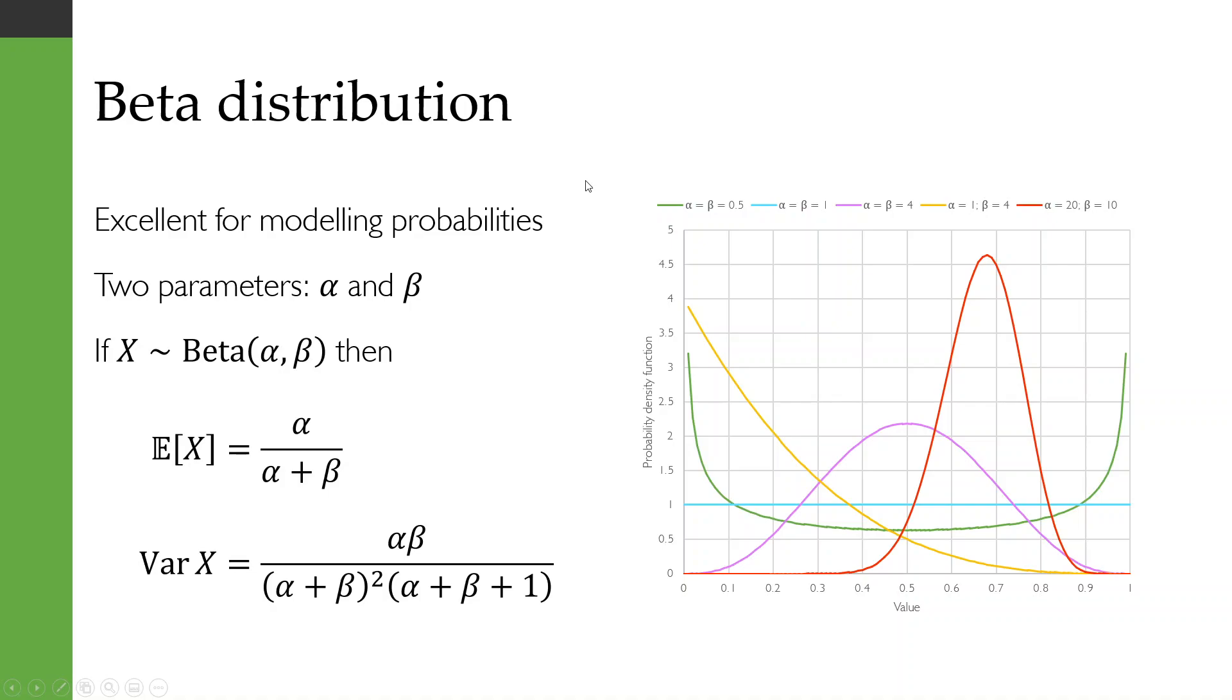But if we look over here on this graph on the right, we'll be able to see the sorts of distributions that we can produce with the beta distribution. The first thing to notice is that it's always going to have a value between 0 and 1, and that's one of the reasons why it's very good for modeling probabilities.